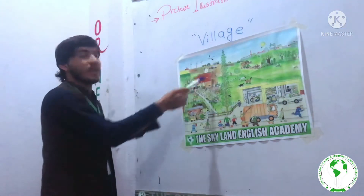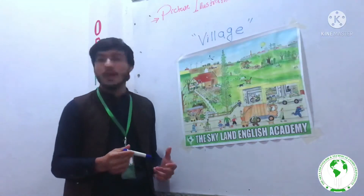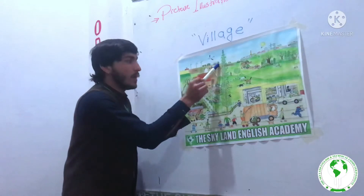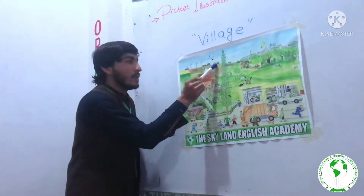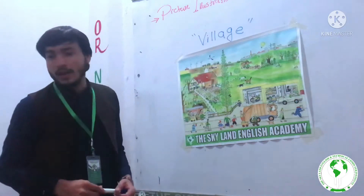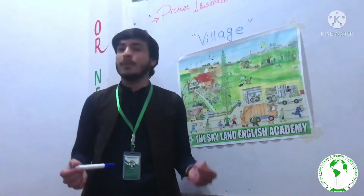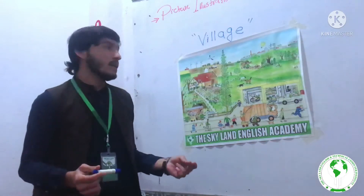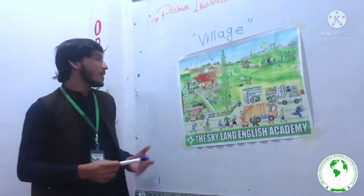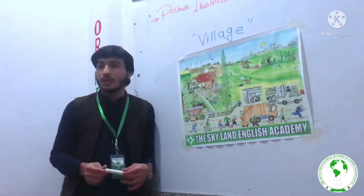According to my point of view, that's a bus, and the bus has a combination of many colors — for example, there's a blue color, a black color, a gray color, a yellow color, and a white color. There is also a person in the bus, and the person is driving the bus.